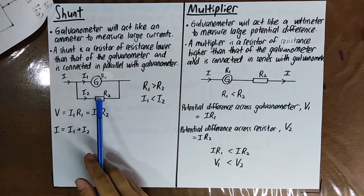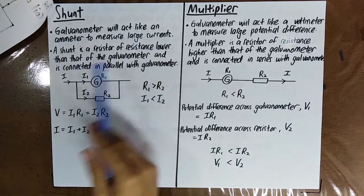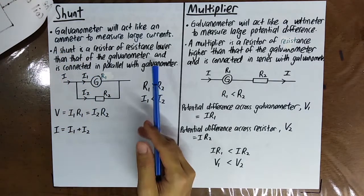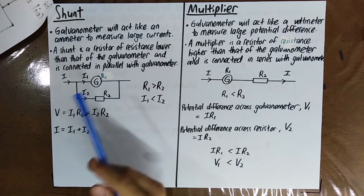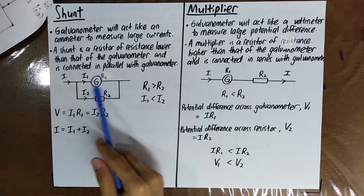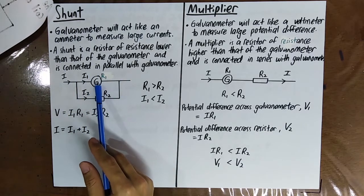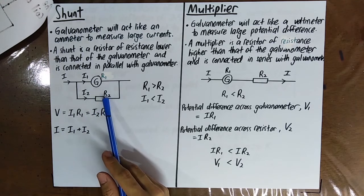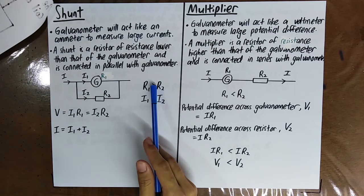You use a shunt, and the shunt has a very, very low resistance so that when the shunt is connected in parallel with the galvanometer, most of the current will flow through the shunt. If there's too much current flowing through your galvanometer, it will burn out. So you use the shunt to protect your galvanometer. The resistance of the shunt should be smaller than the resistance of the galvanometer, i.e., R2 smaller than R1.